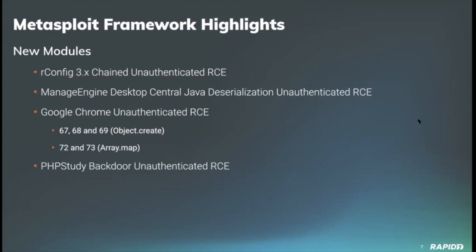From contributor Tim Wright come two new modules targeting 64-bit Google Chrome browser. The first module targets Chrome versions 67, 68, and 69 and exploits a type confusion vulnerability in Chrome's just-in-time compiler via object create to store shellcode into a writable and executable region of a WebAssembly object and then execute it. The second module targets Chrome versions 72 and 73 and uses heap corruption to modify the contents of an existing typed array, which can be used to read and write arbitrary memory.